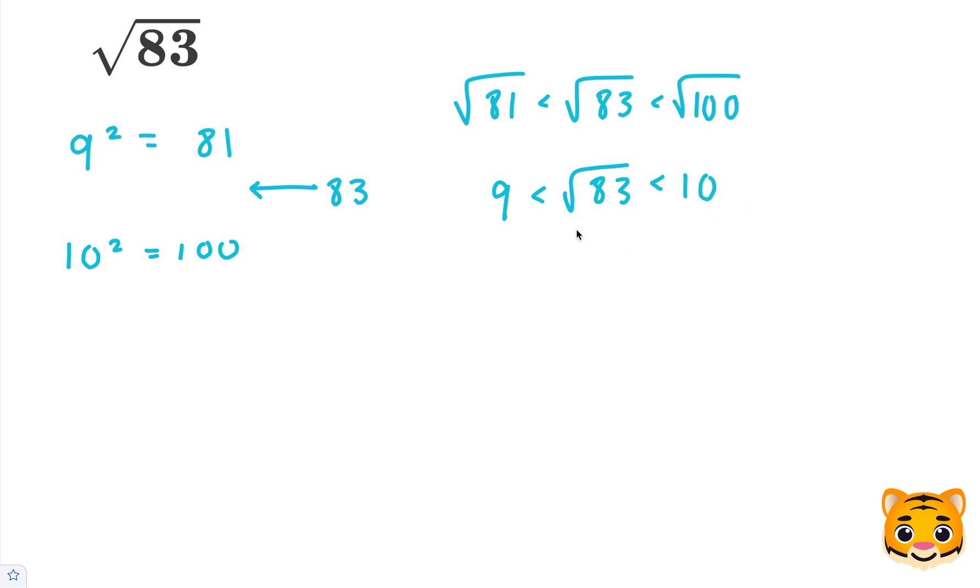Now that we can see that the square root of 83 is between 9 and 10, we can approximate the square root of 83 to the nearest tenths place by looking at decimals between 9 and 10. Because 83 is a little bit closer to 81 than it is to 100, we'll start with values closer to 9 than 10.